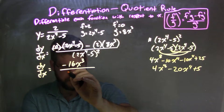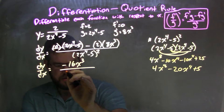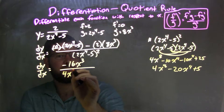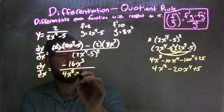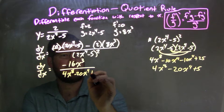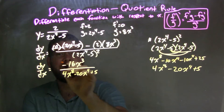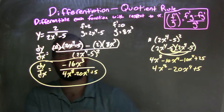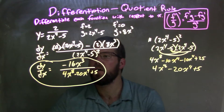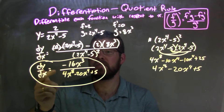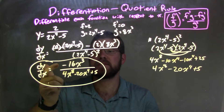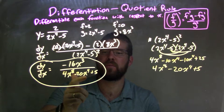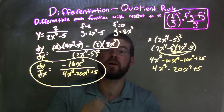And then we have it in the denominator: 4x to the 8th minus 20x to the 4th plus 25. And that is our final answer. We have dy/dx equal to negative 16x to the 3rd over 4x to the 8th minus 20x to the 4th plus 25.